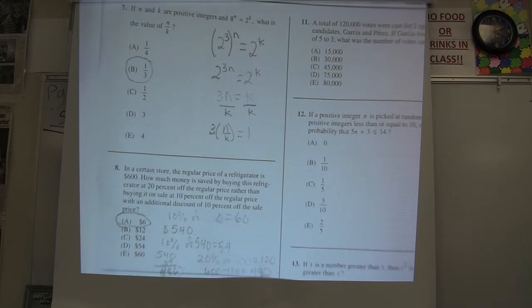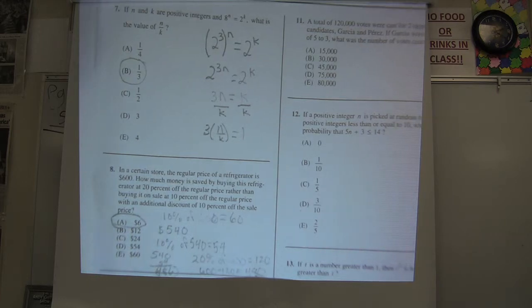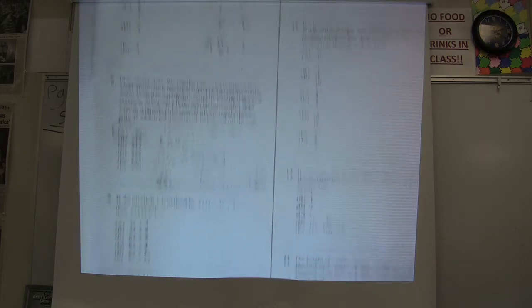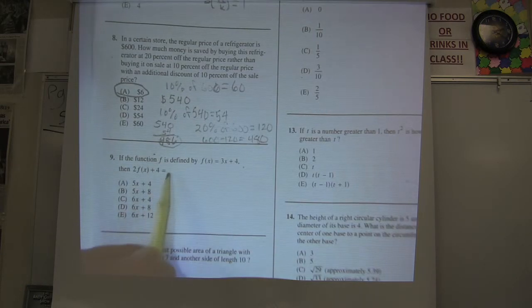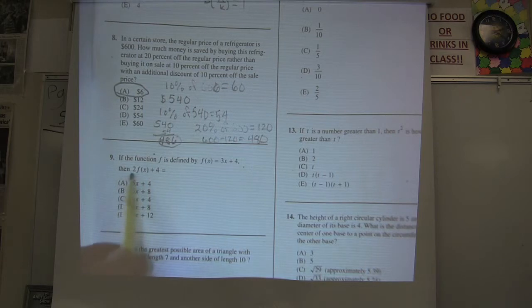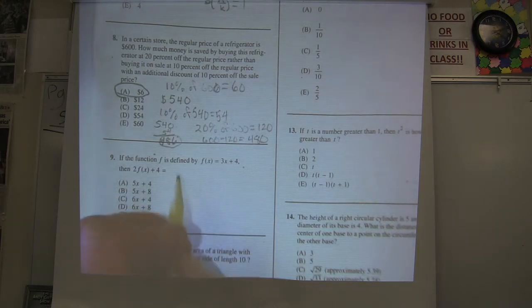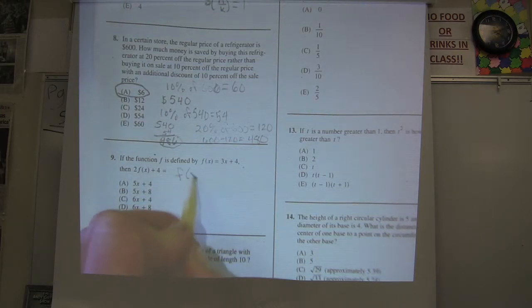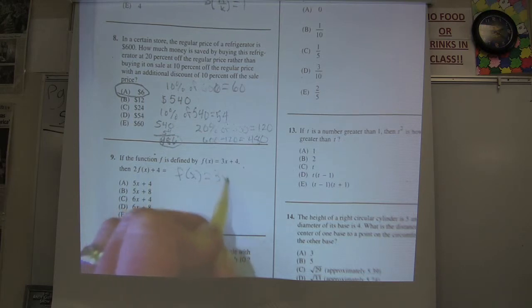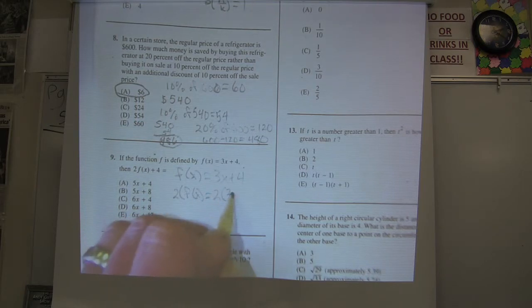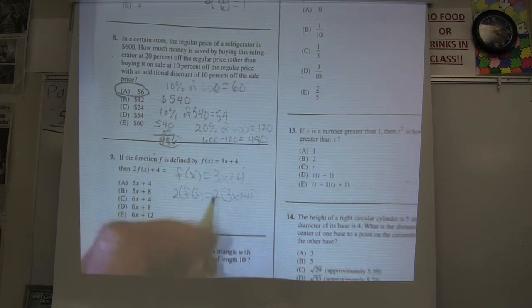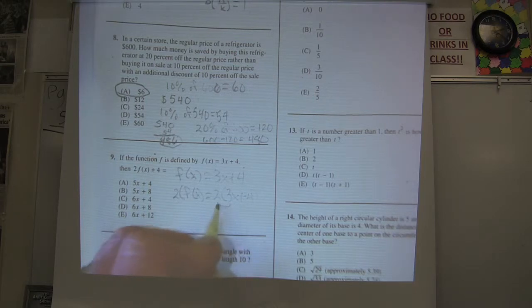Moving on. Number 9, if a function f is defined by this. If f of x equals this stuff, 3x plus 4, well then twice f of x is going to equal twice this side, 3x plus 4, which is going to get me, distribute that guy through, I get 6x plus 8.